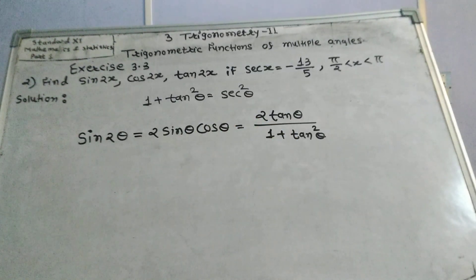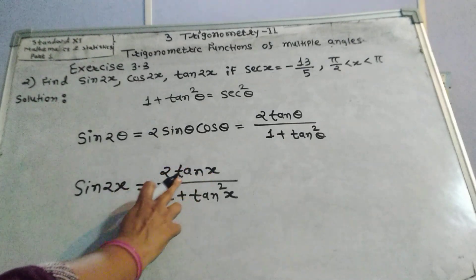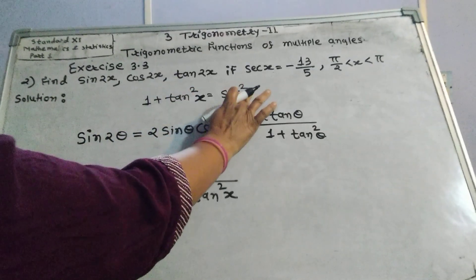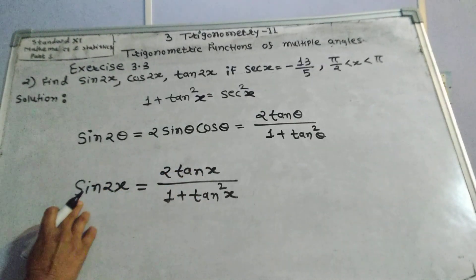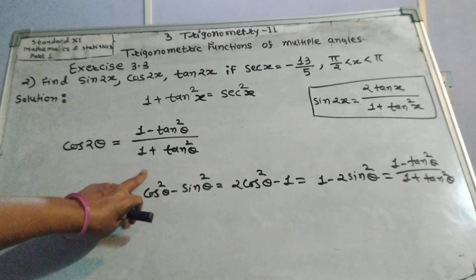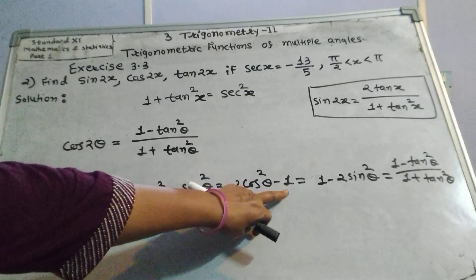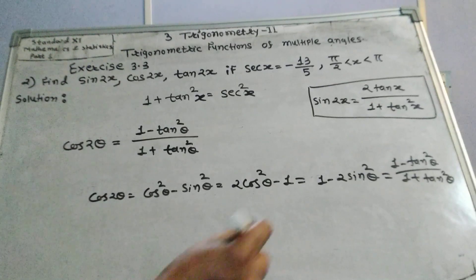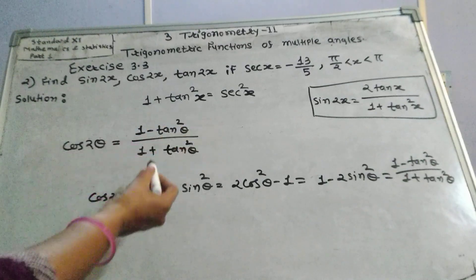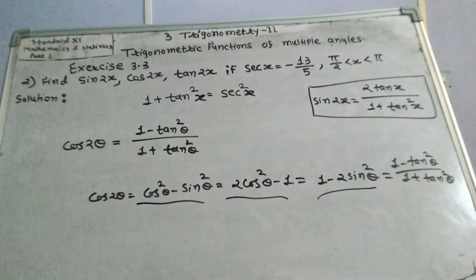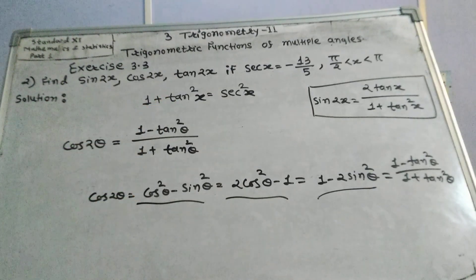cos 2x equals cos²θ minus sin²θ, which equals 2cos²θ minus 1, which equals 1 minus 2sin²θ, which also equals 1 minus tan²θ divided by 1 plus tan²θ. Since we need to find tan's value here, the other three formulas are not needed. We only need to use cos 2θ equals 1 minus tan²θ divided by 1 plus tan²θ.